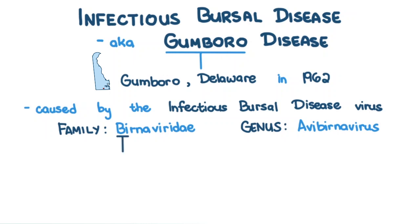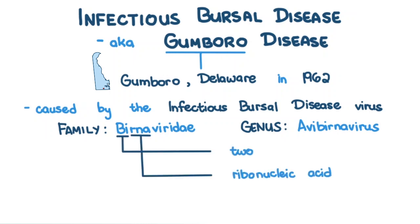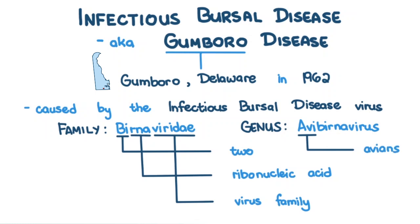Bi meaning 2, RNA referring to ribonucleic acid, and Viridae meaning virus family. And Avi here refers to avians.